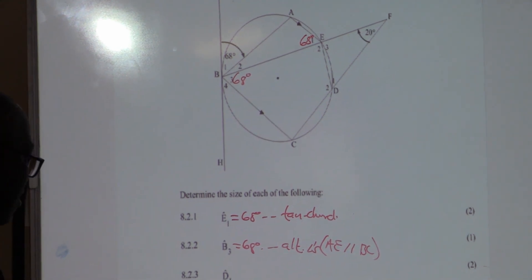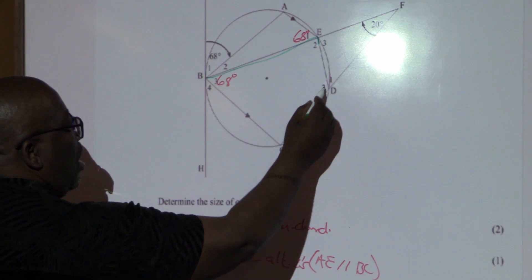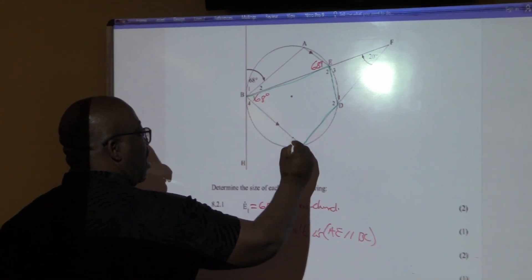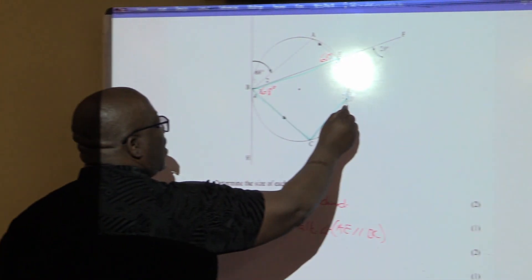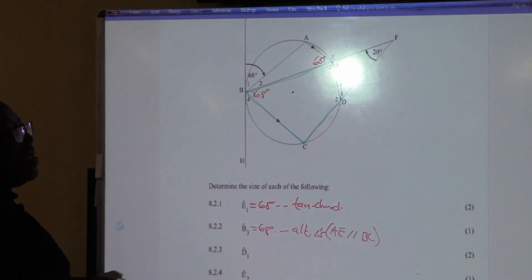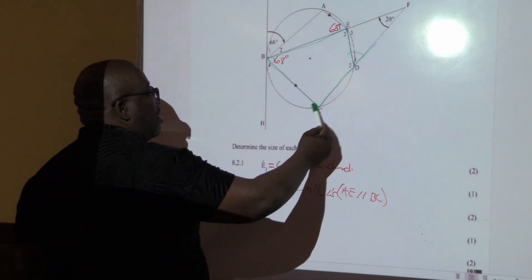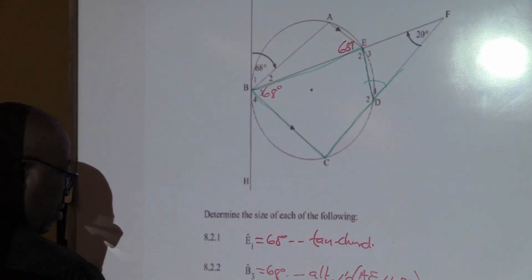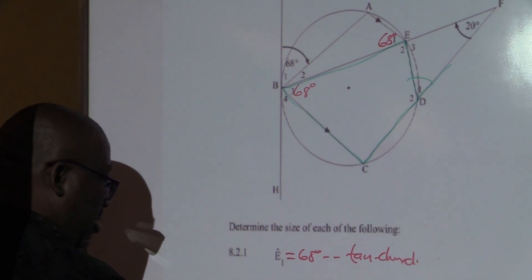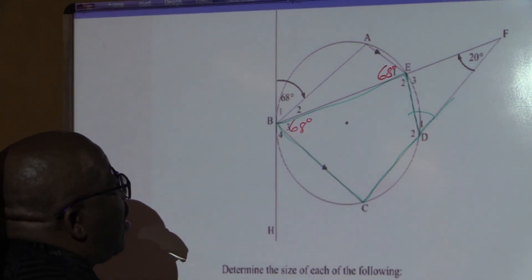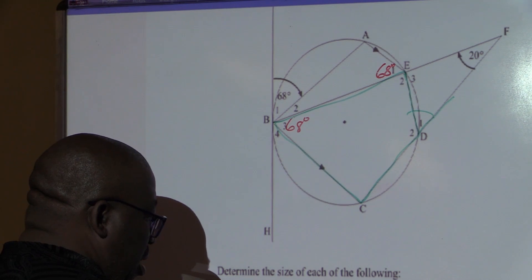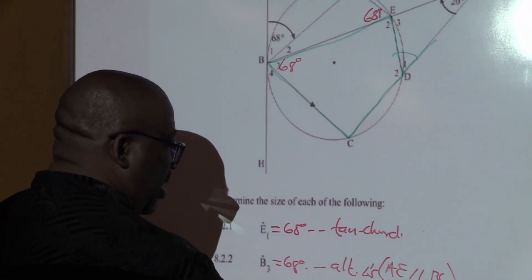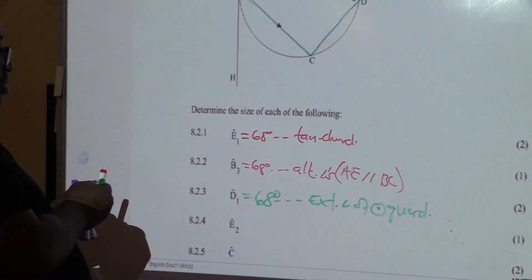Question 8.2.3: find D1. This is where D1 is. This is a cyclic quad. In relation to this cyclic quad, D1 is the exterior angle of a cyclic quad. The theorem says the exterior angle of a cyclic quad is equal to the interior opposite angle. So D1 is also equal to 68 degrees.